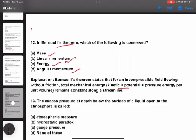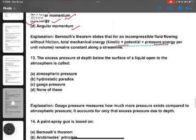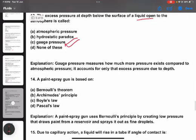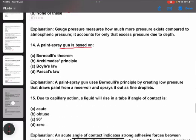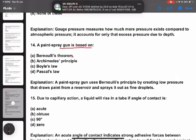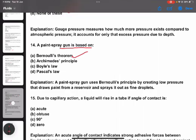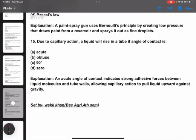The answer is energy. Question thirteen: Excess pressure at depth below the surface of a liquid open to the atmosphere is called gauge pressure. Question fourteen: A paint spray gun is based on Bernoulli's principle. Question fifteen: Due to capillary action, liquid provides an acute angle of contact.